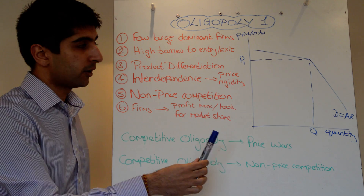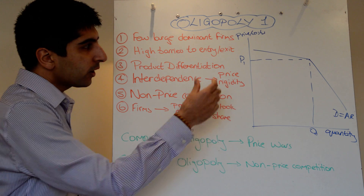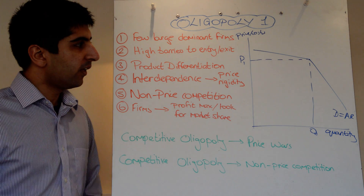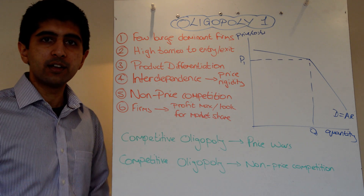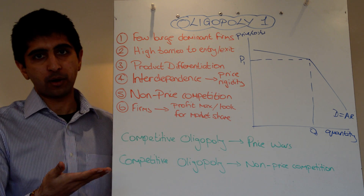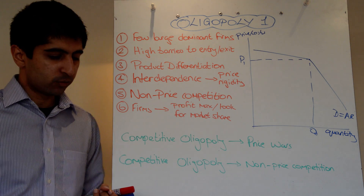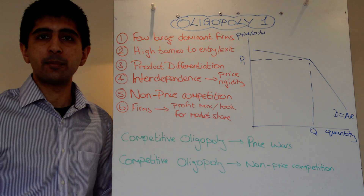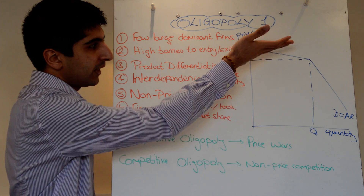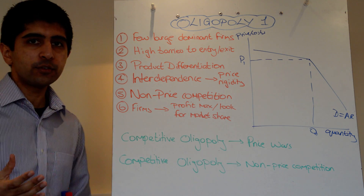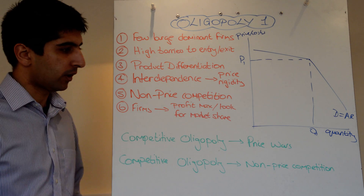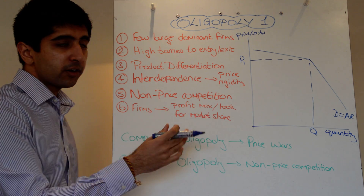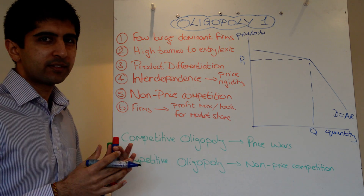It also doesn't make sense for this firm to reduce its price because demand is very inelastic below P1. This firm is not going to gain a huge number of consumers by reducing its price, because what are its rivals going to do? They're just going to follow — either match the lower price or undercut it. Therefore, all we'd see is a massive price war, which is terrible for this firm because it actually loses profits: quantity doesn't increase very much but the price falls massively, and market share barely changes. So reducing price is pointless too. The elastic curve above and the inelastic curve below P1 tell us the firm should keep its price at P1.